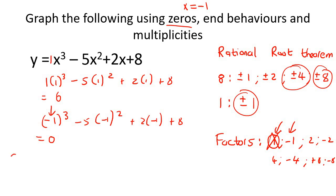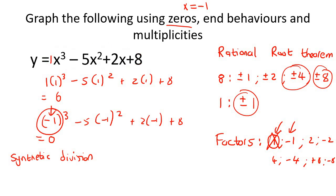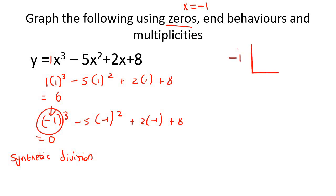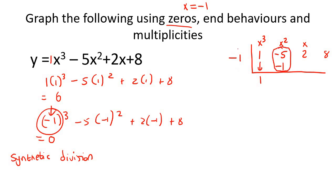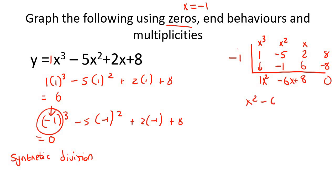Now we use synthetic division with -1 and the coefficients 1, -5, 2, 8 — representing x³, x², x, and the constant. Carry down the 1, multiply by -1 to get -1, add to get -6, multiply by -1 to get 6, add to get 8, multiply by -1 to get -8, add to get 0. The result is x² - 6x + 8.